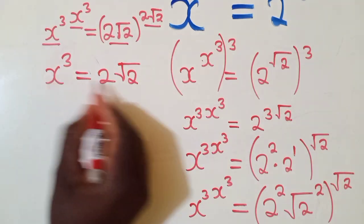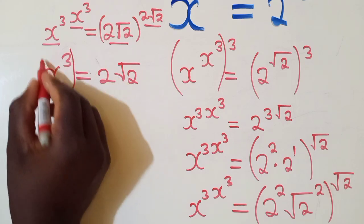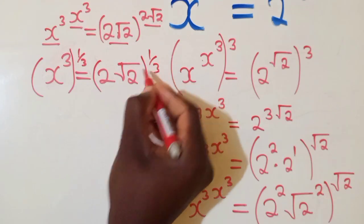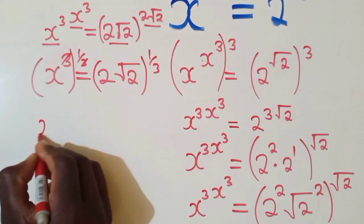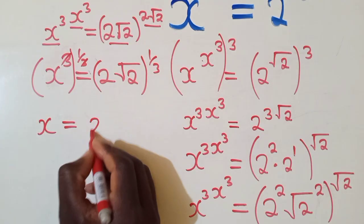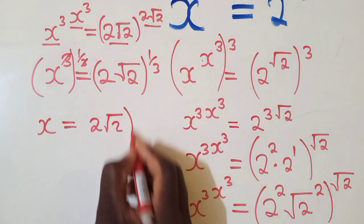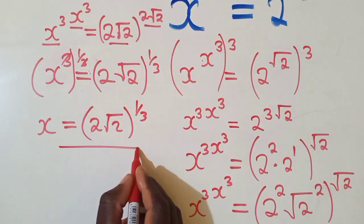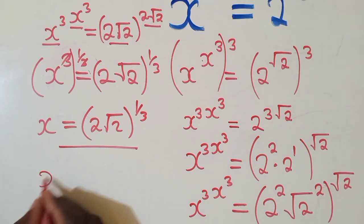Now to solve for x, remember we have x power 3. To solve for x we just apply the 1 over 3 so that this and this can cancel. So our solution will be 2 root of 2, root over 2, 1 over 3. And if you want you can end here, or if you want to simplify it further you can.